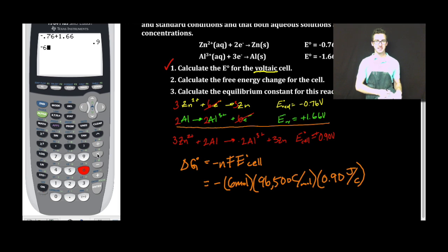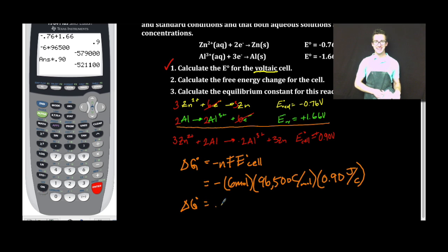Calculator time. Negative 6 times 96,500 times 0.90, delta G equals negative 5.2 times 10 to the 5 joules.